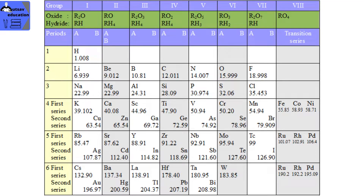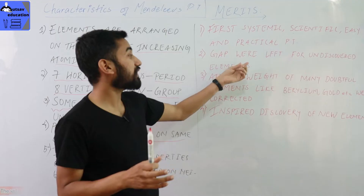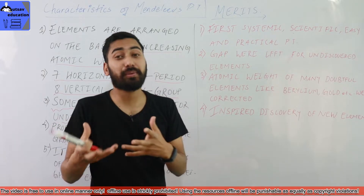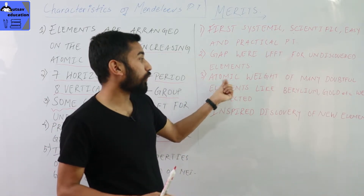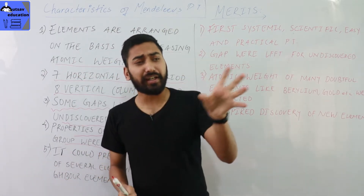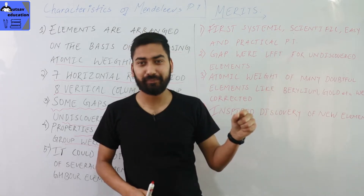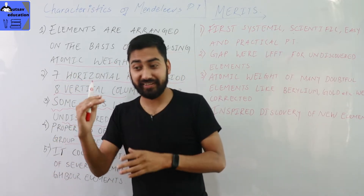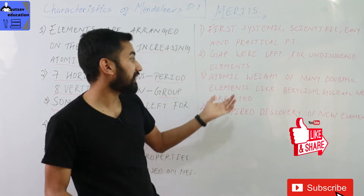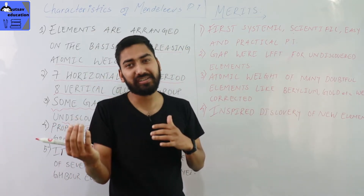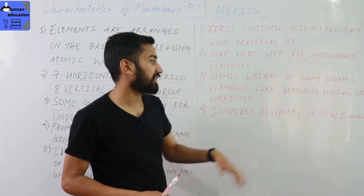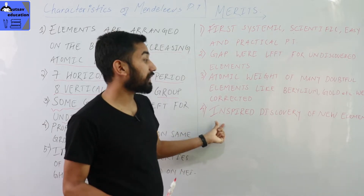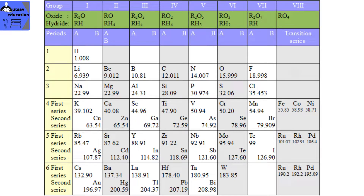Another merit is that it helped correct the atomic weights of many doubtful elements. By placing elements in their correct position based on periodicity and orderly properties, the correct atomic weight could be confirmed. Additionally, by leaving gaps, Mendeleev was able to predict the properties and existence of new, undiscovered elements, which was a significant scientific achievement.